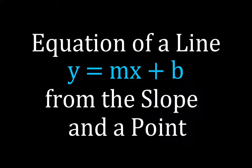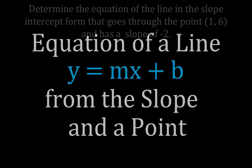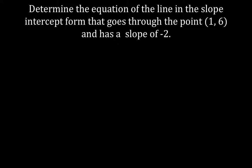In this video, we are going to determine the equation of a line in the slope-intercept form y equals mx plus b, and we're going to do that from being given the slope of the line and a point through which the line passes. So we're going to use a slope and a point to get the equation of the line. I'm going to go through three examples — the first one a little slower, then we'll speed it up.